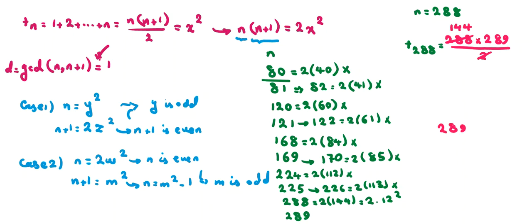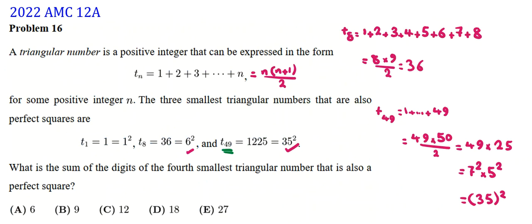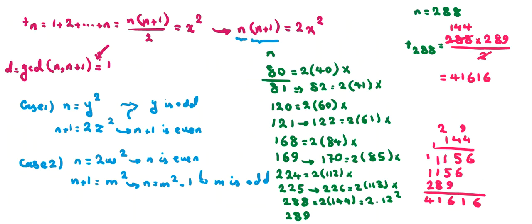Now we multiply 289 × 144. Working through the multiplication: 289 × 4 = 1156, 289 × 40 = 11560, 289 × 100 = 28900. Adding these: 1156 + 11560 + 28900 = 41616. So T_288 = 41616.